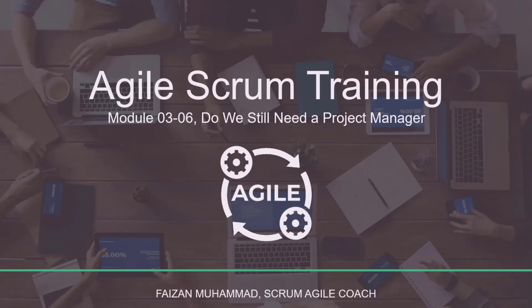Hello and welcome to this module looking at whether we still need a project manager with all the other roles in place. A product manager usually defines the requirements and delegates their execution to a project manager, who coordinates all necessary activities to deliver the project requirements. However, the scrum framework does not include a project manager role in the traditional sense. Instead, the tasks associated with this role are distributed between the scrum product owner and the scrum master.